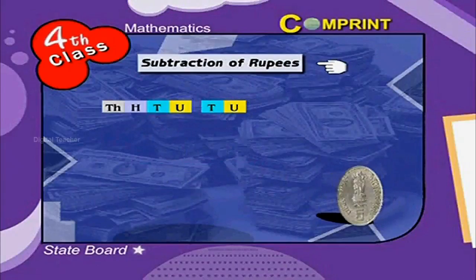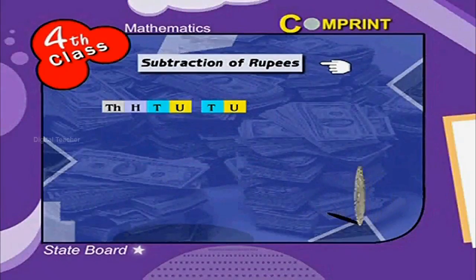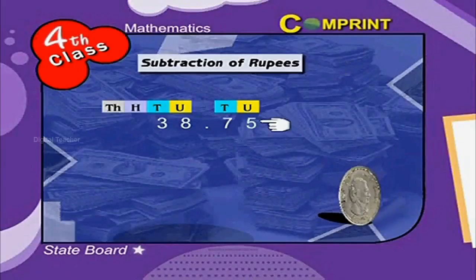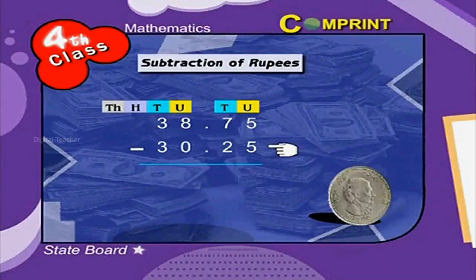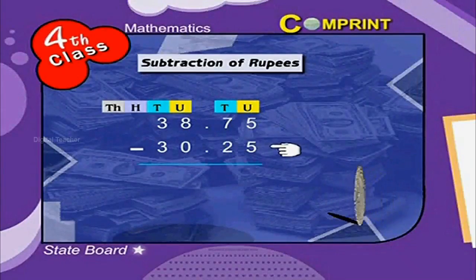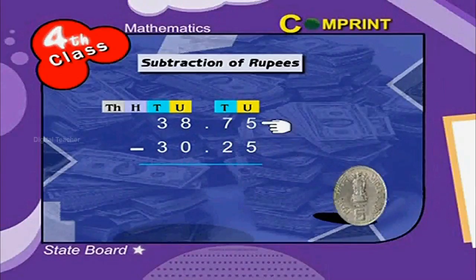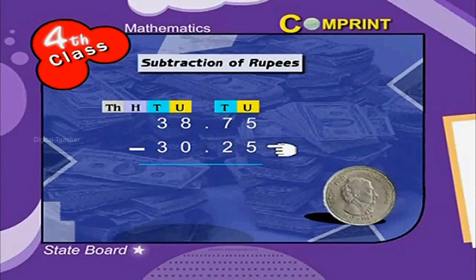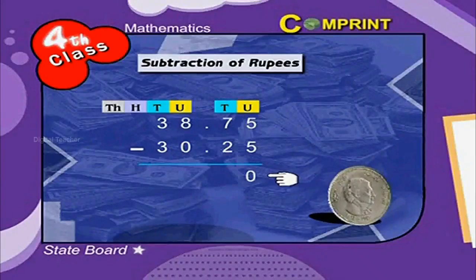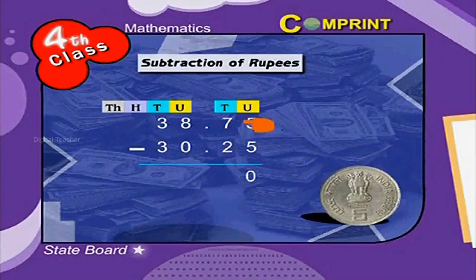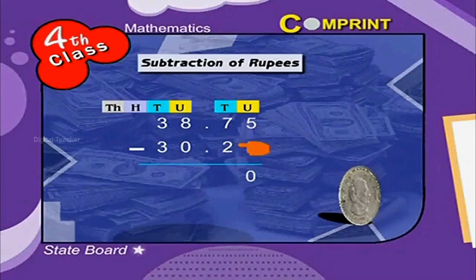Now let us do subtraction of rupees. Here is an example: 38 rupees 75 paisae minus 30 rupees 25 paisae. First, subtract the ones place: 5 minus 5 is equal to 0. Then subtract the tens place: 7 minus 2 is equal to 5.